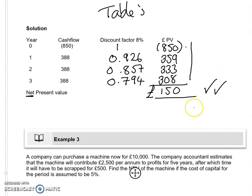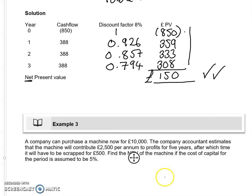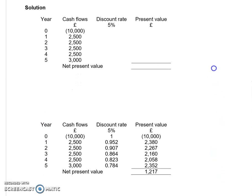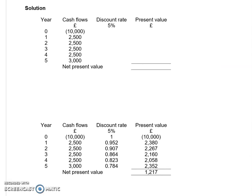Let's have a look at a more complicated question. Here we have a machine that costs £10,000. We've got some contribution — cash inflow per annum — to the profits for five years, and afterwards it's going to be scrapped, giving us more complicated scenarios. We need to find the net present value with a cost of capital of 5%. Here's one I prepared earlier laid out in exactly the same table format. The cash flow in year five has been increased by £500 for the scrap value, so we have our contribution of £2,500 each year, and in year five we add the scrap value. When we add up the figures, we have a present value of £1,217, which is positive, so the project is worthwhile.